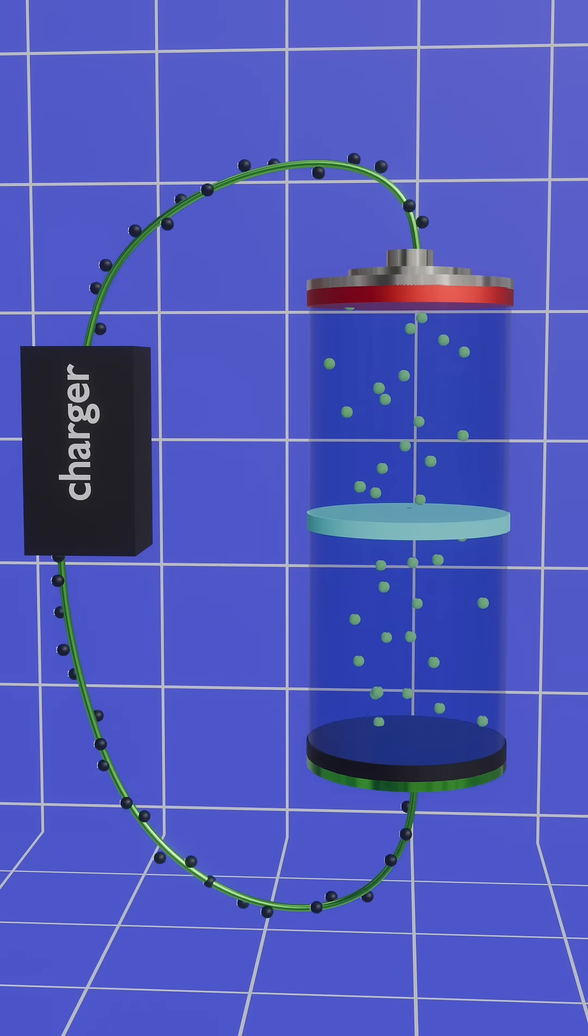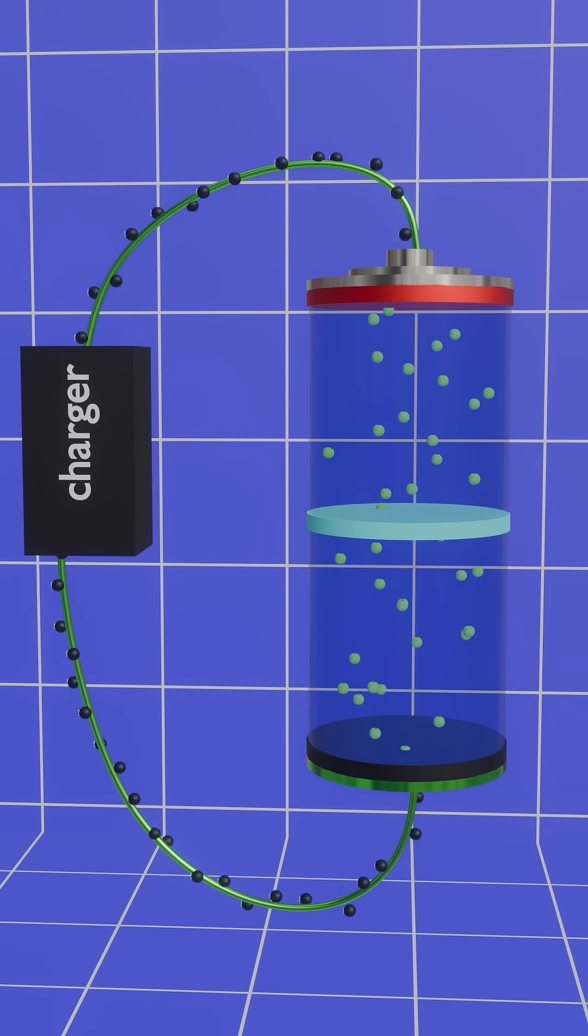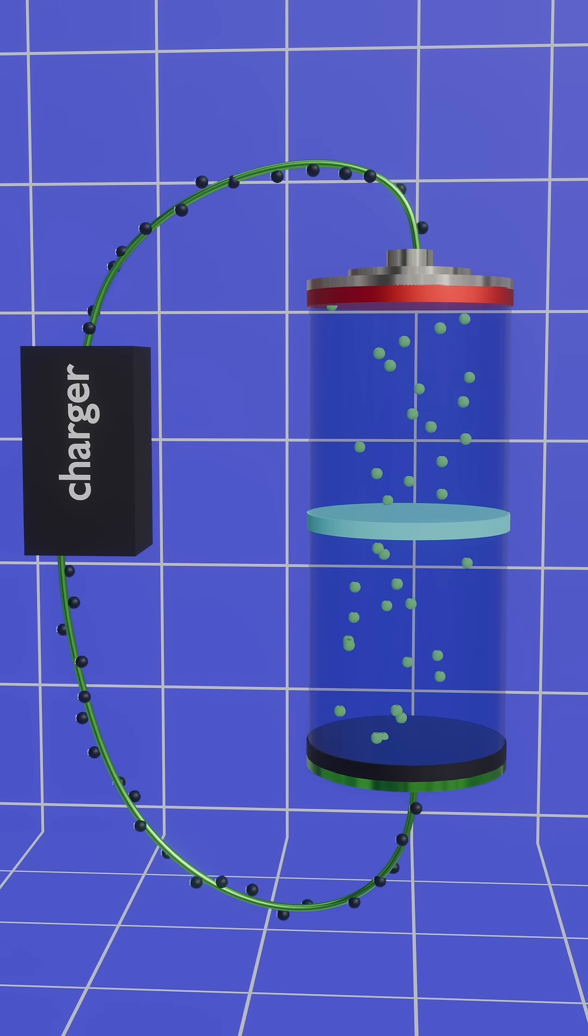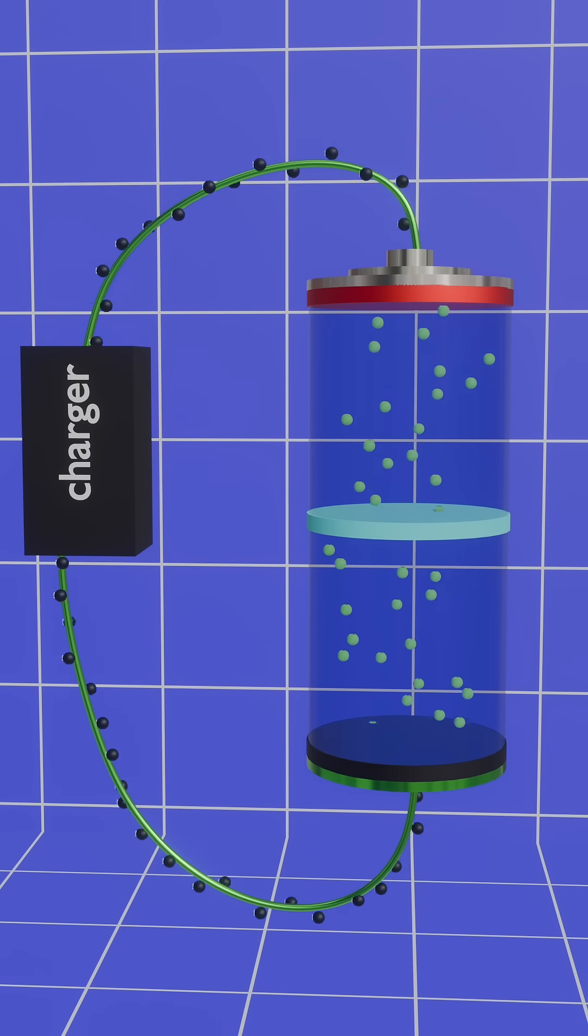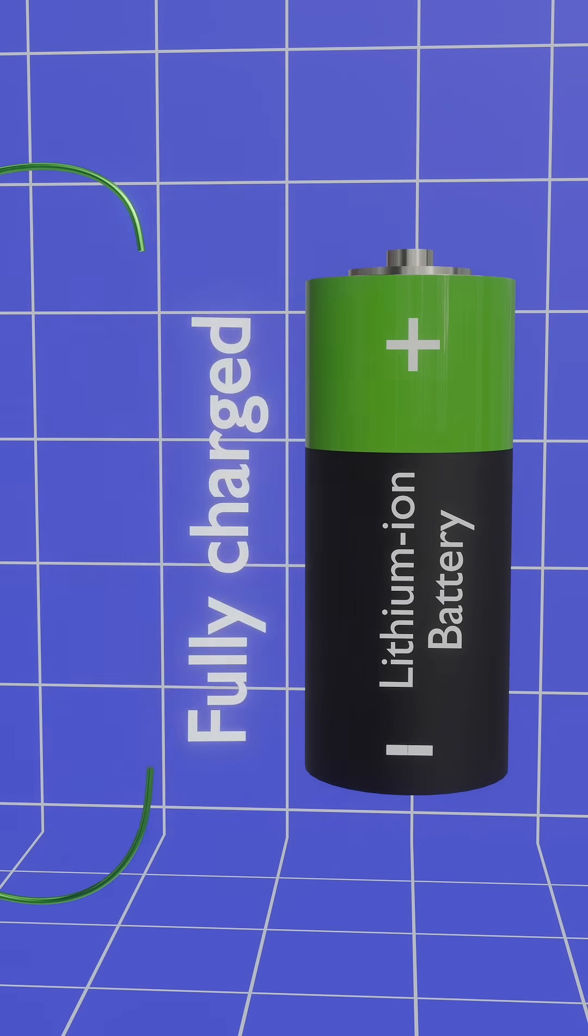During charging, electrons move from the cathode to the anode via an external circuit, and lithium-ions travel to the anode via the solution and form lithiated graphite. When all lithium-ions reach the anode, the battery is fully charged.